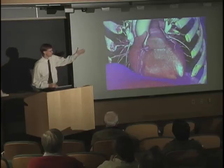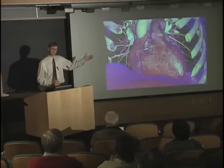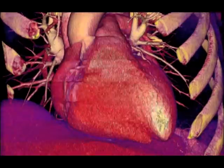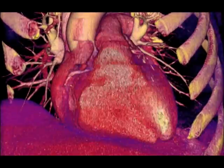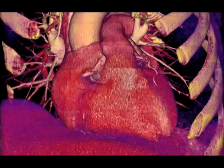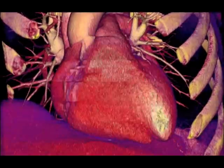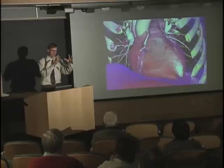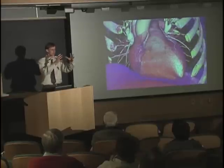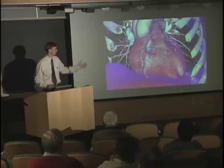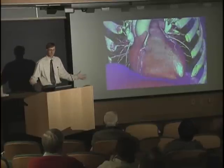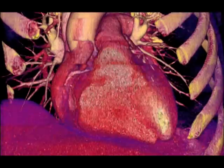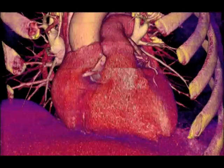CT has undergone a major revolution because of technological advances, and we can now produce images like this — whereas five or ten years ago we couldn't do anything close to this. Because CT scans are really fast, we're able to time the scan so you capture different phases of the heart as it contracts. You can see this is a contracting heart done by a CT scan — we've subtracted out all the bones and muscles.